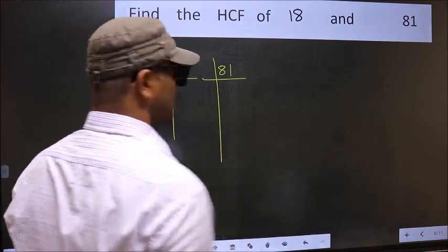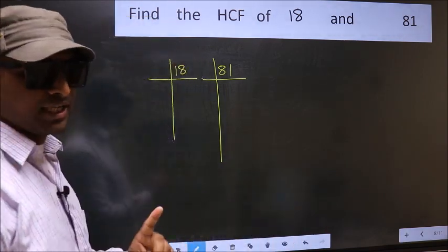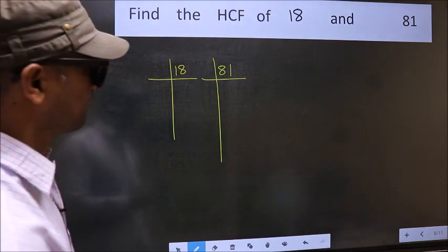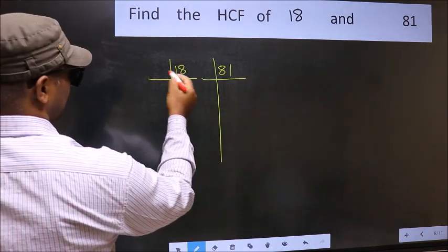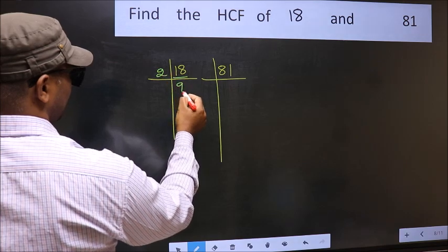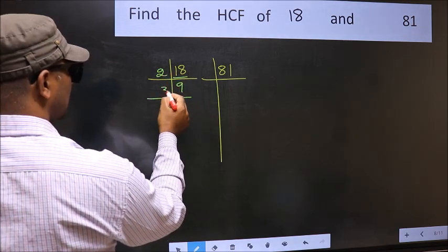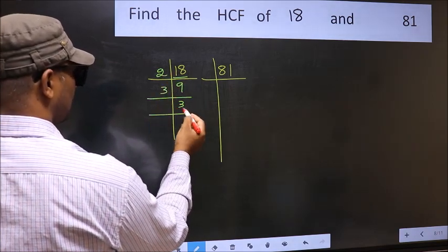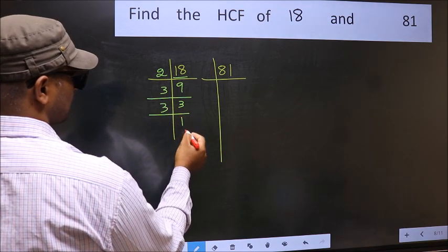This is your step 1. Next, here we have 18. 18 is 2 times 9. 9 is 3 times 3. 3 is a prime number, so 3 ones is 3.